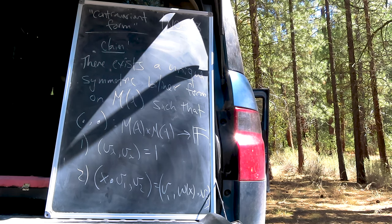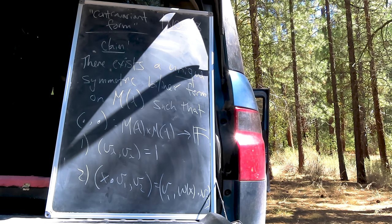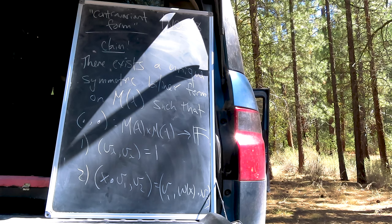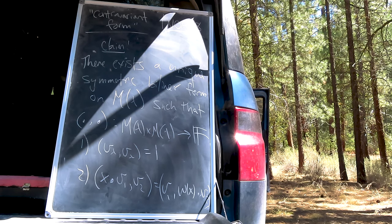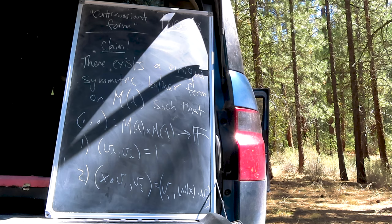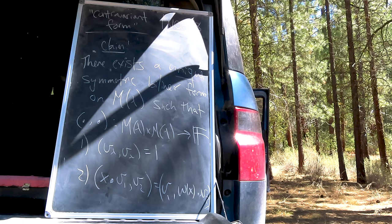Given two vectors in M Lambda, say V1 and V2, and an operator, say X, the bilinear form of X on V1 with V2 equals the bilinear form of V1 with Omega of X on V2. In effect, the bilinear form implicitly defines a sort of dual space for M of Lambda on which the action of N plus is exchanged with N minus.